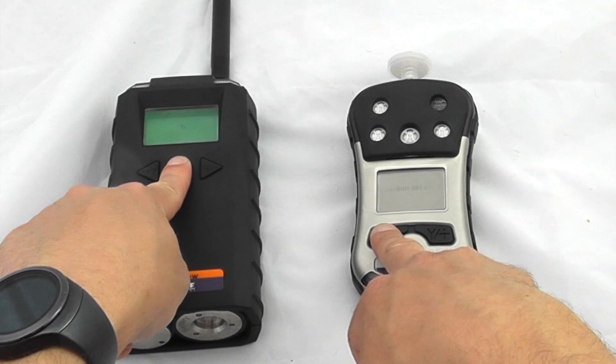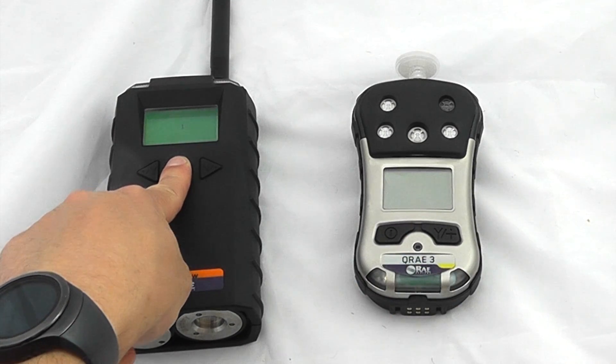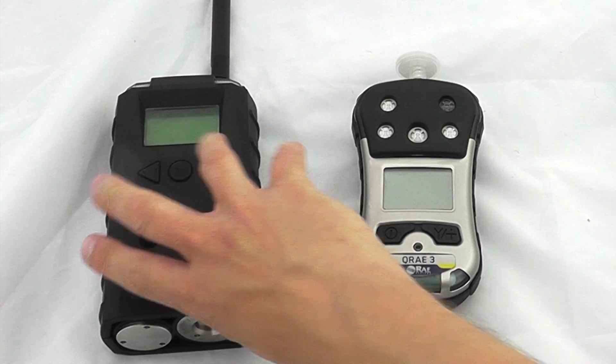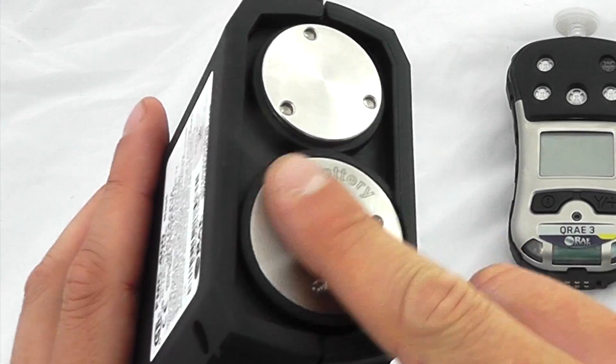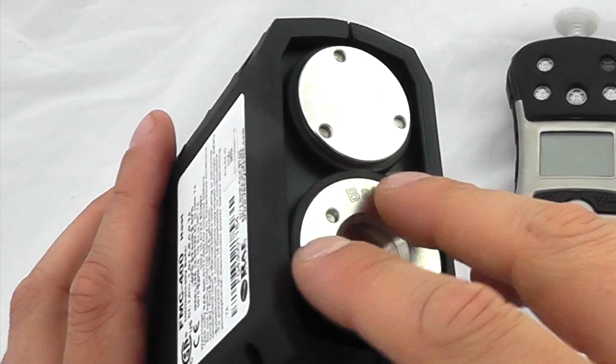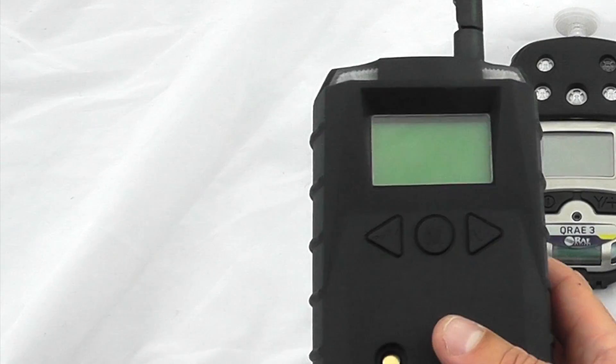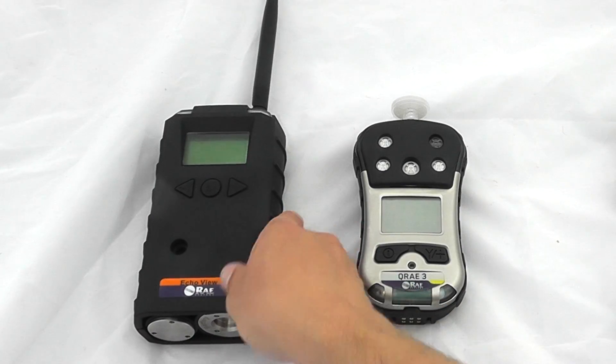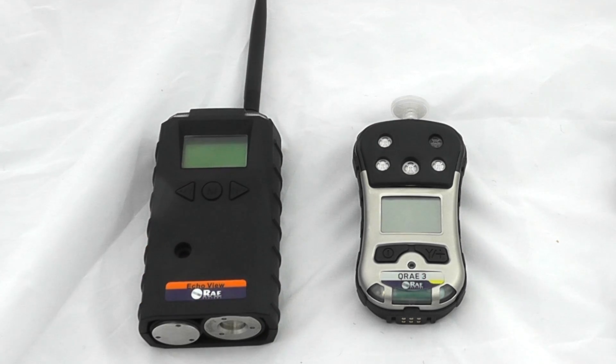The Echo View operates using a lithium-ion battery. The battery is removed from this compartment using a special tool, and the lithium battery slides in and out. It has good battery life, but it's important to have multiple spares on site as they're not rechargeable.